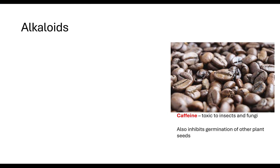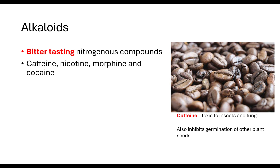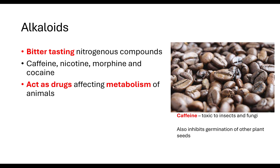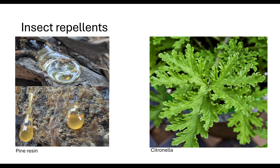Plants also produce alkaloids — bitter-tasting nitrogenous compounds such as caffeine, nicotine, morphine, and cocaine. These are toxic to insects and fungi and act as drugs affecting animal metabolism, so they deter herbivores from feeding. Plants also produce insect repellents such as pine resin and citronella. By repelling insects, the plant is repelling the vector that could be carrying the pathogen.